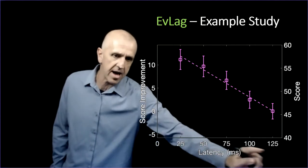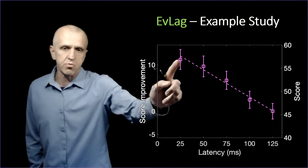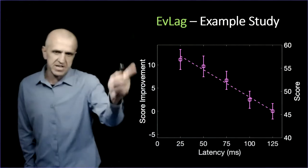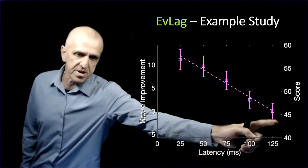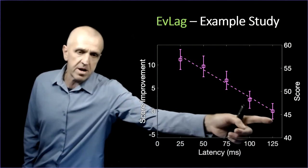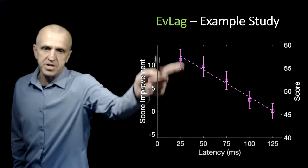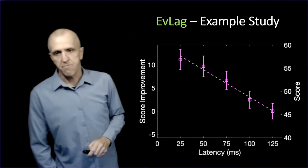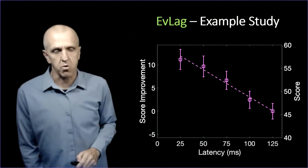The score is degrading, kind of a reasonable linear fit with that. On this axis is improvement. If you had this 25 millisecond system and you're a competitive gamer and you upgraded to a newer system at 25 milliseconds, your score would improve by 10%, which might be a significant improvement if you care about your Counter-Strike score.